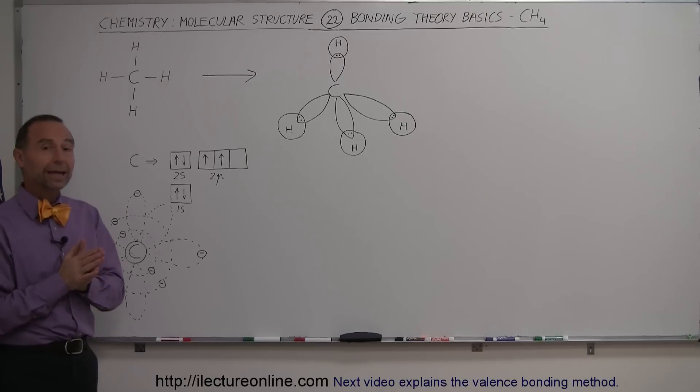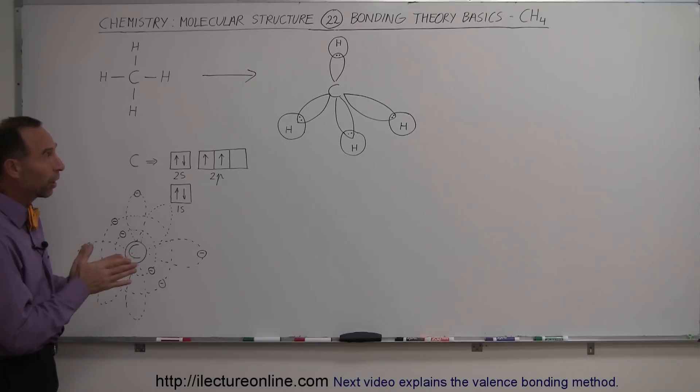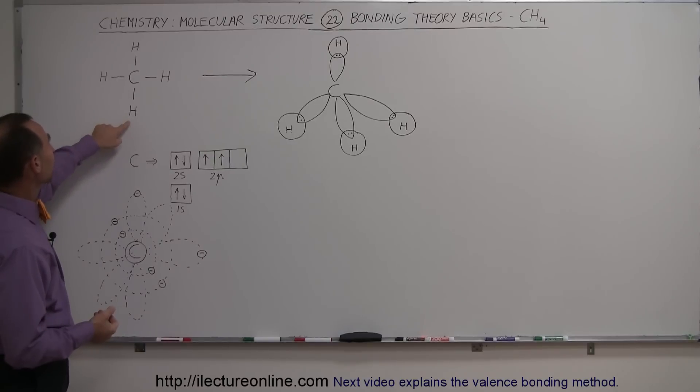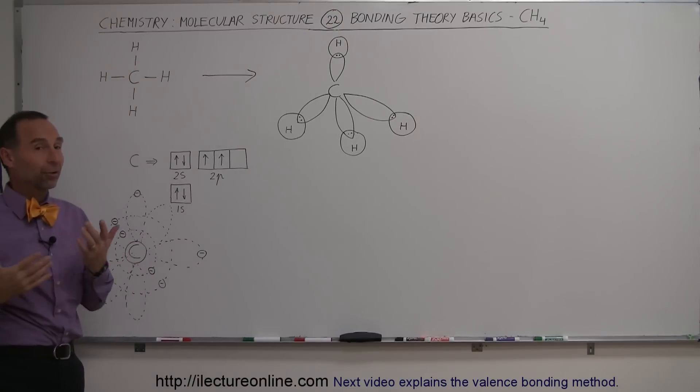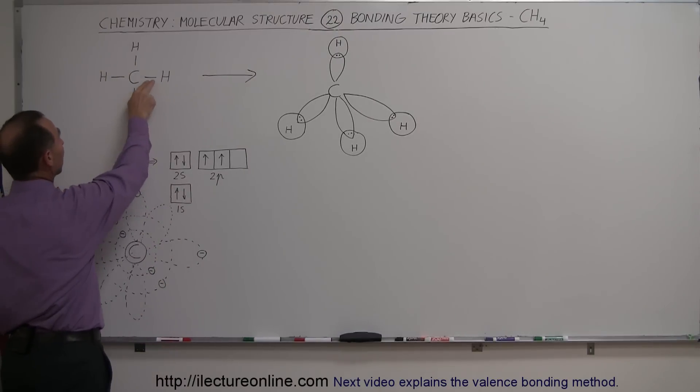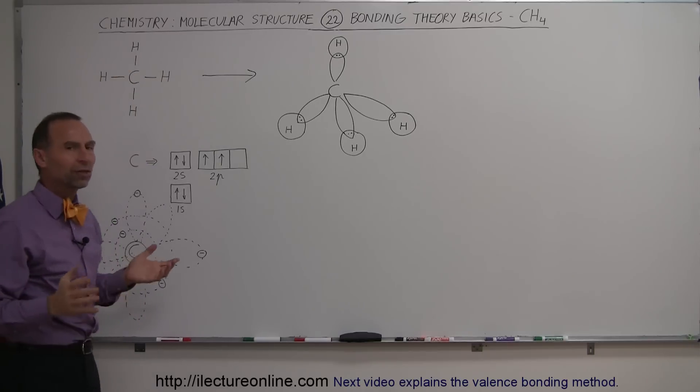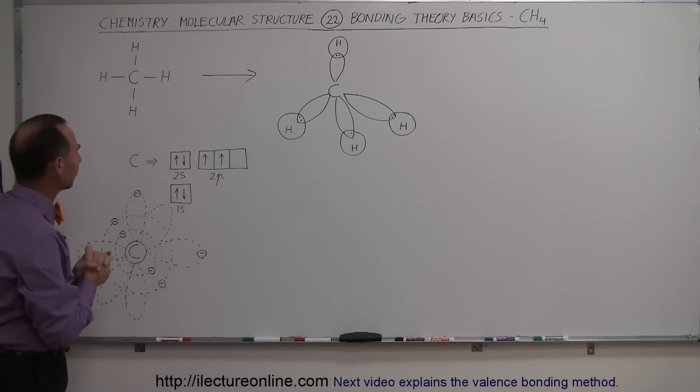Here we're going to take a look at the methane molecule. One carbon, four hydrogen makes methane, and the Lewis structure of methane looks like this. We have a carbon atom that has four valence electrons used for each of the four bonds with the hydrogen. Each hydrogen only has one valence electron, so there's a pair of electrons in each bond. That's what the molecule looks like from a Lewis structure perspective.